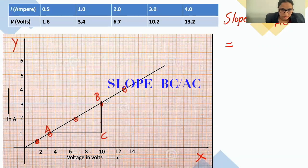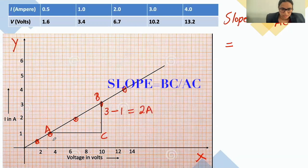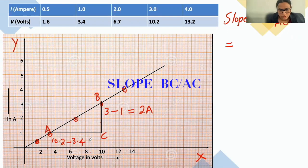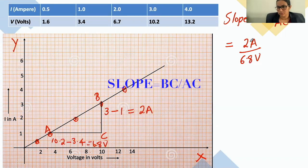Let us find out the values. What is BC? It is 3 minus 1, which is 2 ampere. What is AC? It is 10.2 minus 3.4, which gives 6.8. Each small unit is 0.2, so 3.2, 3.4. So AC = 6.8 volt. The slope equals BC/AC = 2 ampere divided by 6.8 volt. So this is the slope.